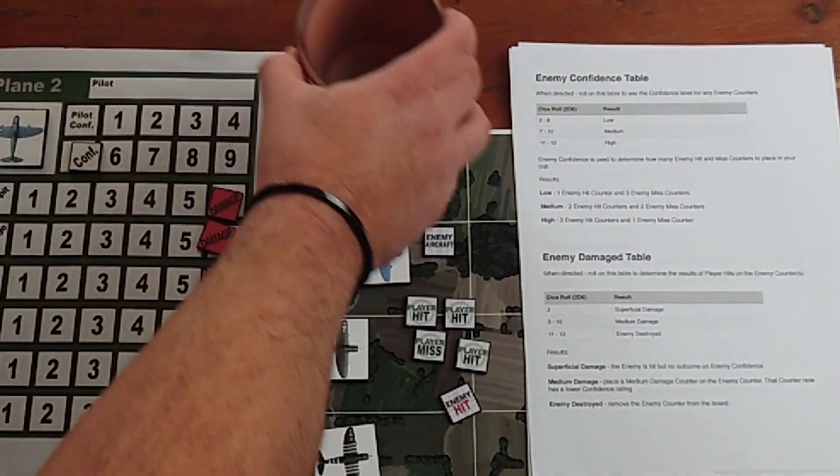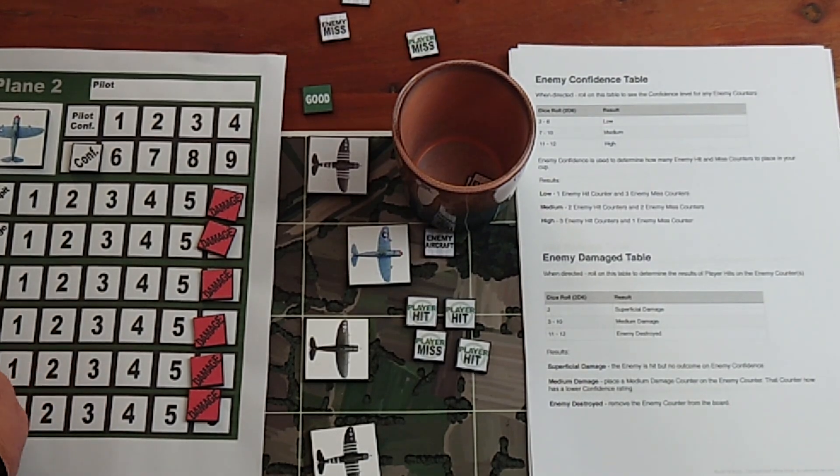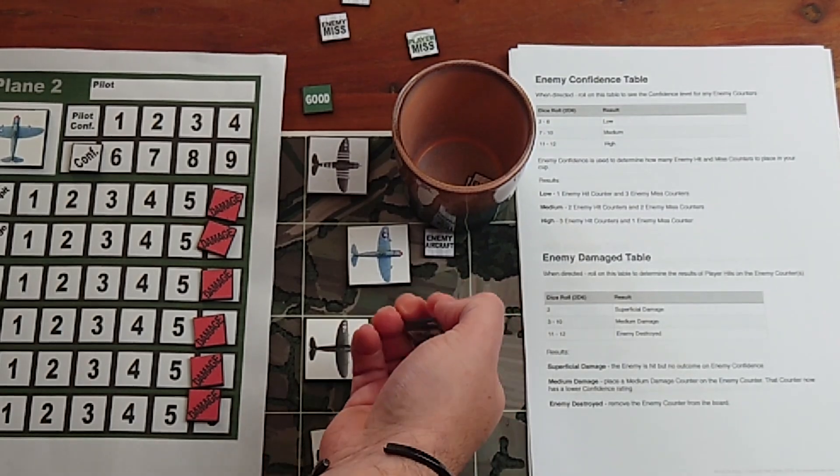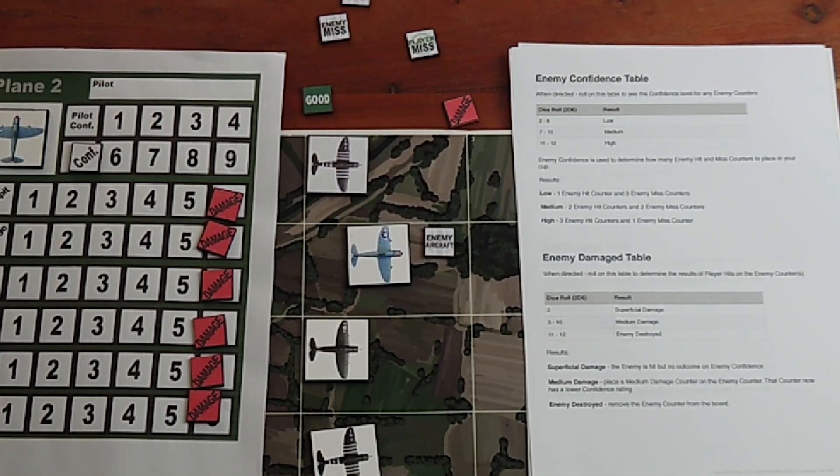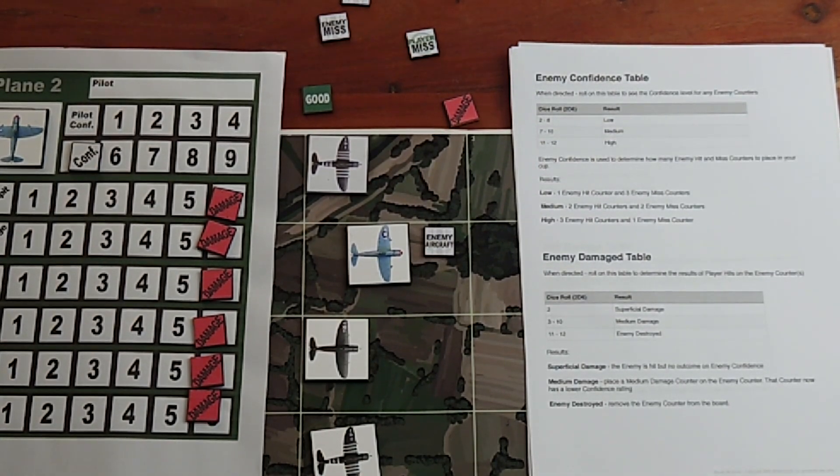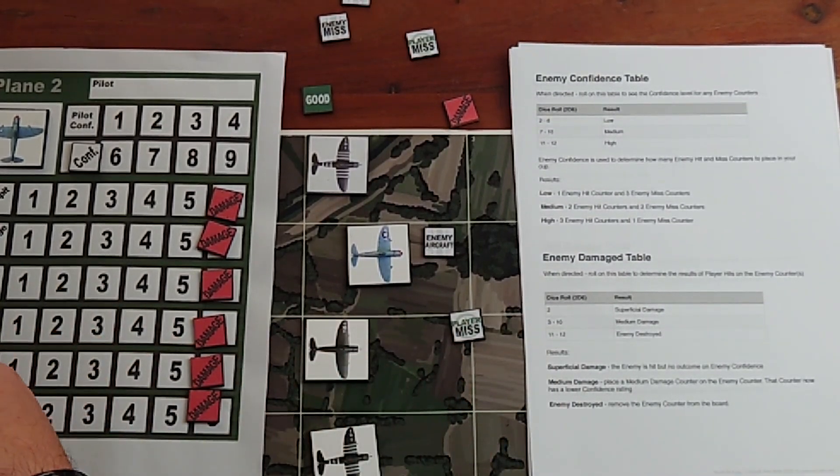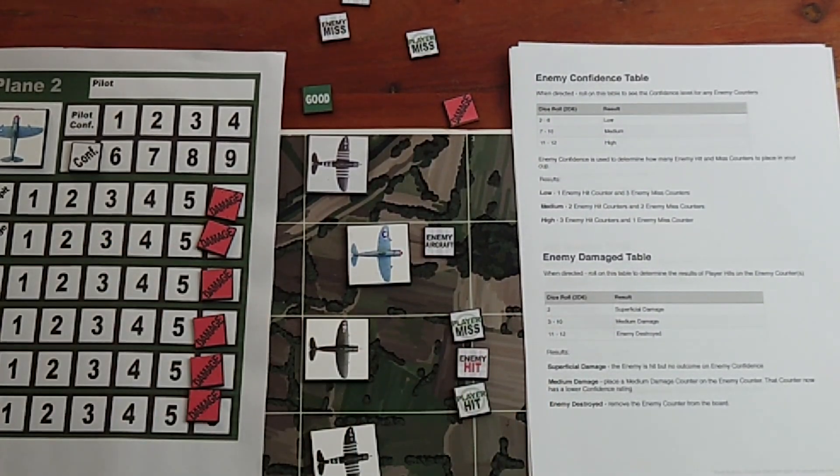If I wanted to, I could spend another point and remove an enemy hit counter. Let's do that. I've removed the enemy hit counter from the cup. I have spent all the points I can do, three points. Those will go in there and I will blindly pull three counters. That will determine the results of the combat. I get a player miss, I get an enemy hit, and I get a player hit.